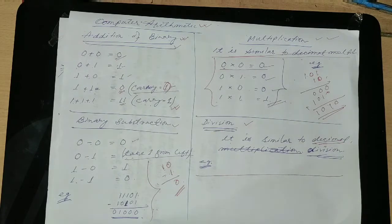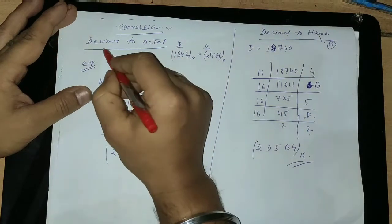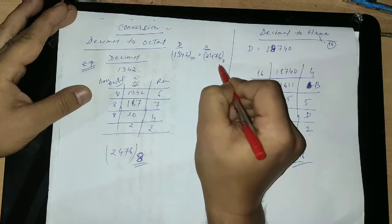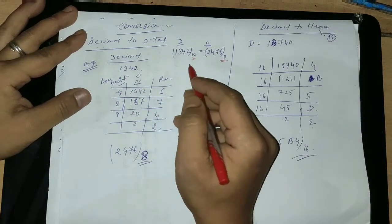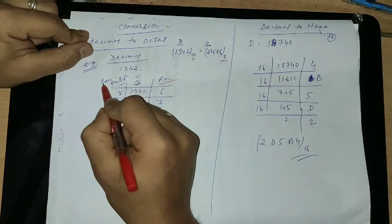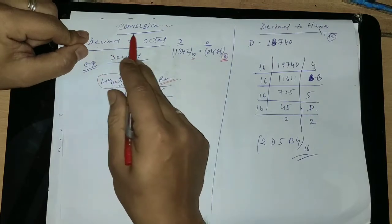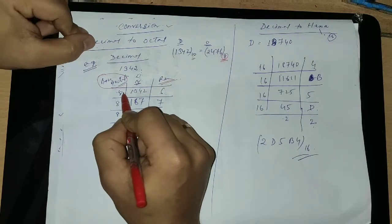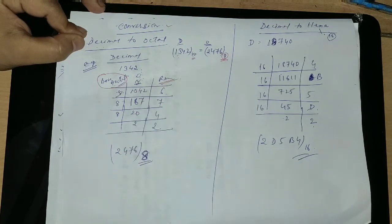Next we are going to learn the conversion rule — the conversion rule of number systems. Let's see what are the conversion rules of the number system. At first we will try decimal to octal number system. Decimal number system has 10 base and octal number system has 8 base. I wrote DN, that means decimal number system, and REM means remainder, and base of the octal number system.